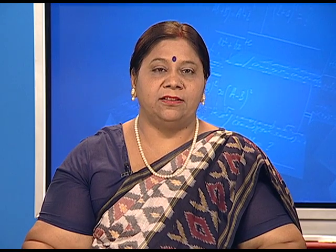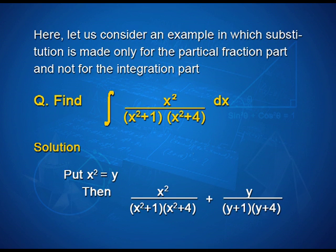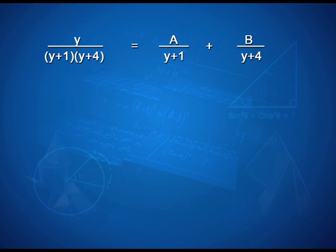Here let us consider an example in which substitution is made only for the partial fraction part and not for the integral part. Find integral x²/((x²+1)(x²+4)) dx. For the solution, put x² = y, then x²/((x²+1)(x²+4)) can be written as y/((y+1)(y+4)). Therefore, y/((y+1)(y+4)) can be expressed as A/(y+1) + B/(y+4).